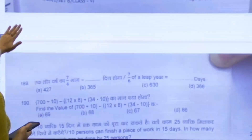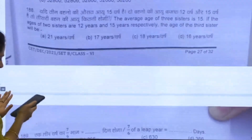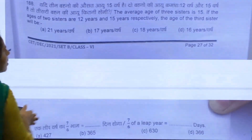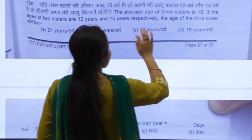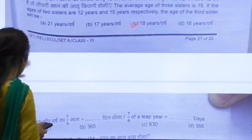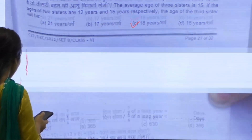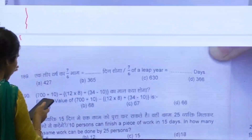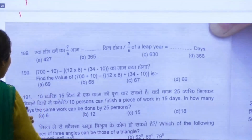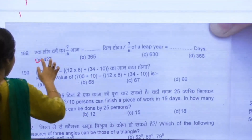Coming to question number 188, we have C as our answer. 189, we have A as our answer.